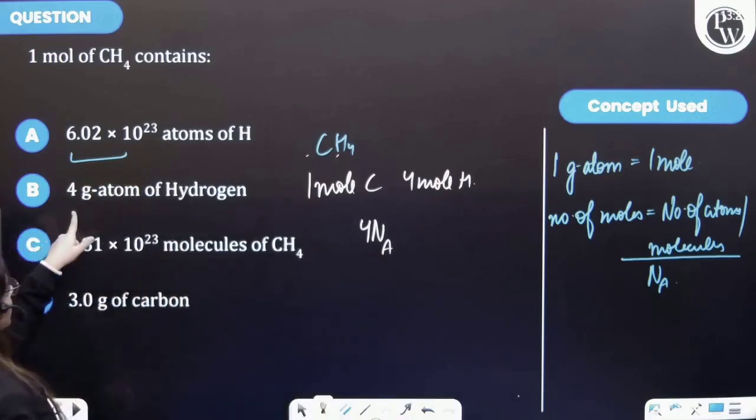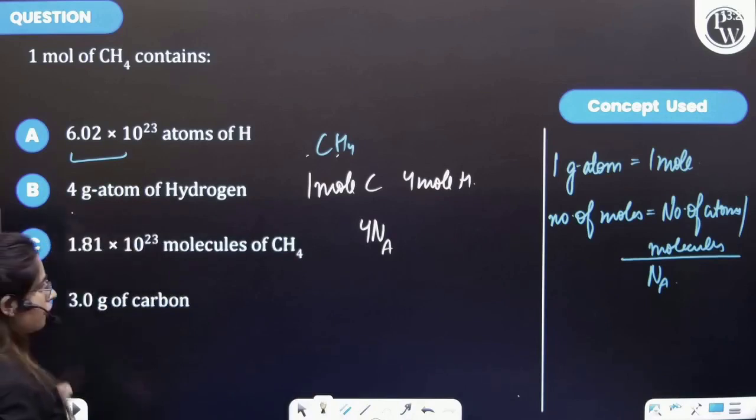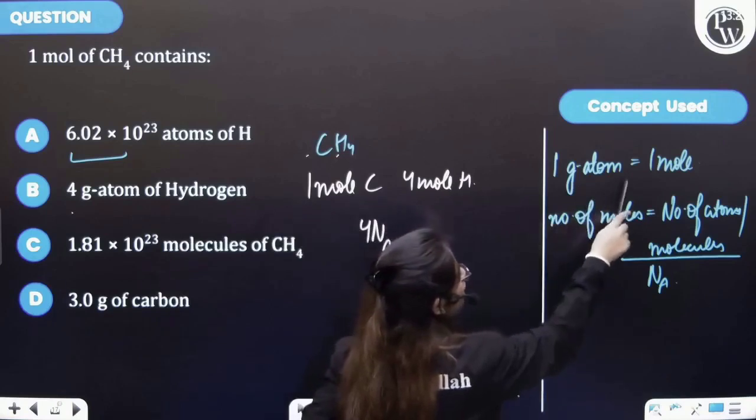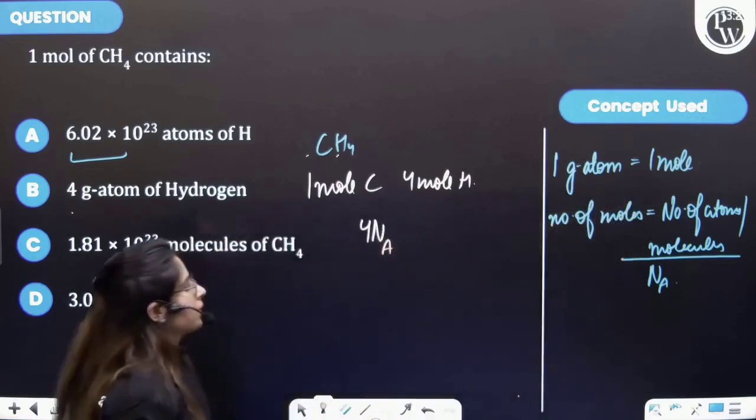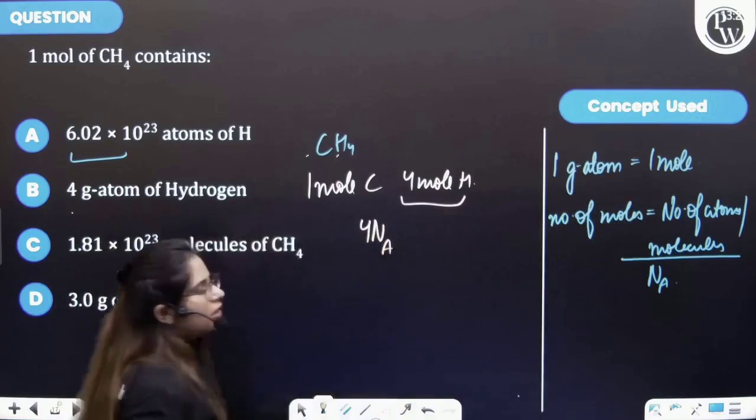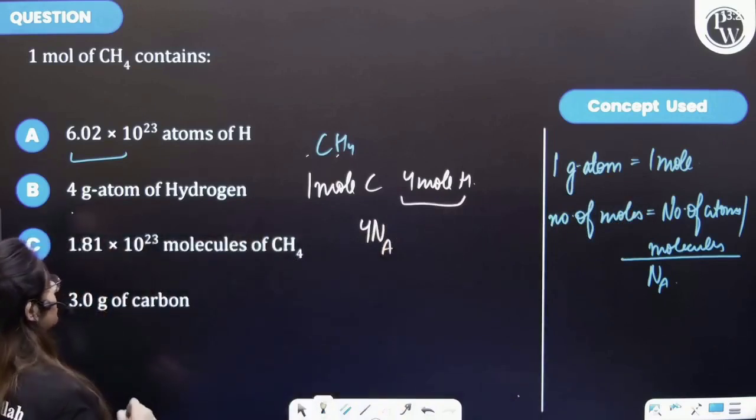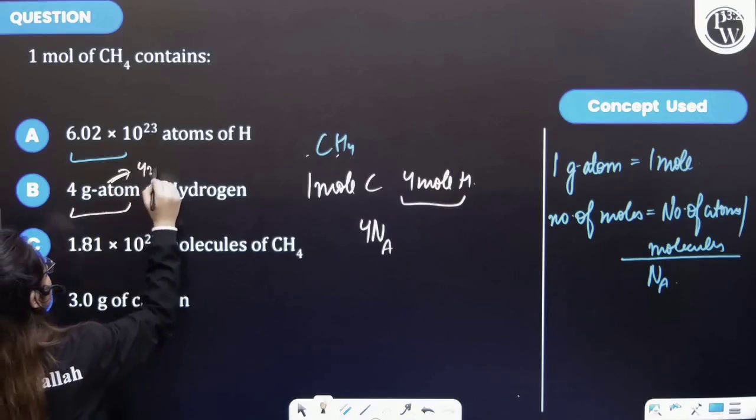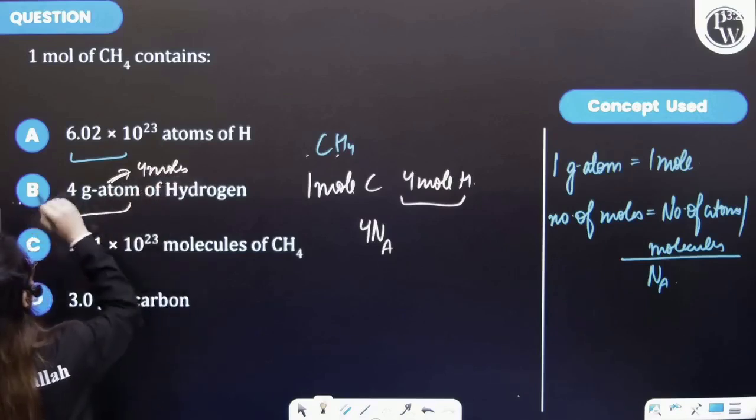Next let's talk about this B option, four gram atom of hydrogen. Now I have told you that one gram atom corresponds to one mole. Also four mole hydrogen is there in compound CH4 or methane. So this is equal to four moles, so this is the correct option.